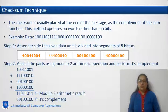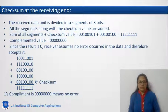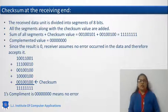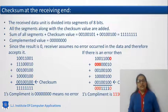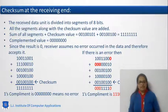After adding, we perform 1s complement to get our calculated checksum. This checksum is appended along with the data bit sequence. When the receiver receives this bit sequence, it again performs the same operation — divides the received data into segments, adds those segments, and performs 1s complement. If the 1s complement result is all 0s, there is no error. But if there is an error, the bits changed from 1 to 0 will cause the complement result to be non-zero, indicating an error.